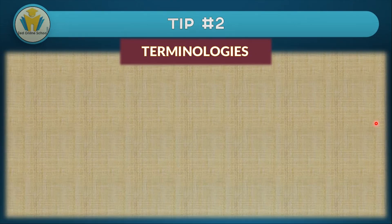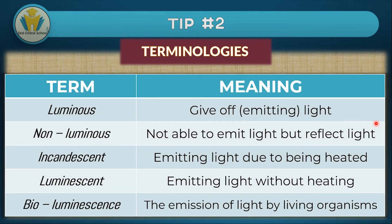The next tip is about some terms you might find used with light. Here's a table showing the term and its meaning. 'Luminous' means to give off light — a luminous object is one that gives off light, for example a bulb or the sun. 'Non-luminous' means something that's not able to emit light but is able to reflect it — for example, the moon is a non-luminous source of light. These two terms give us another way of dividing sources of light into luminous and non-luminous sources.